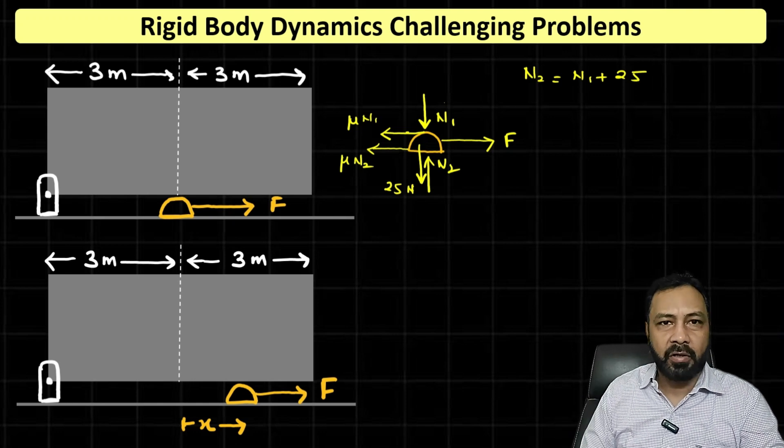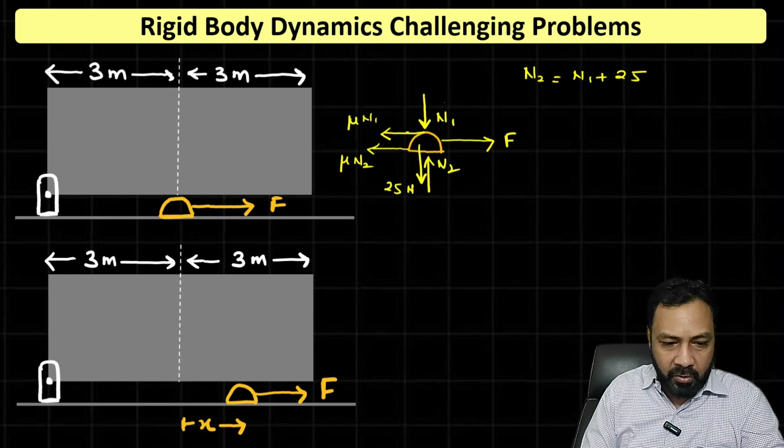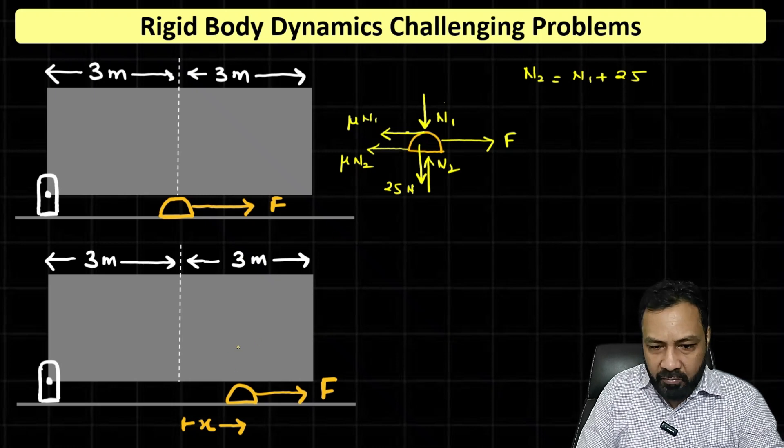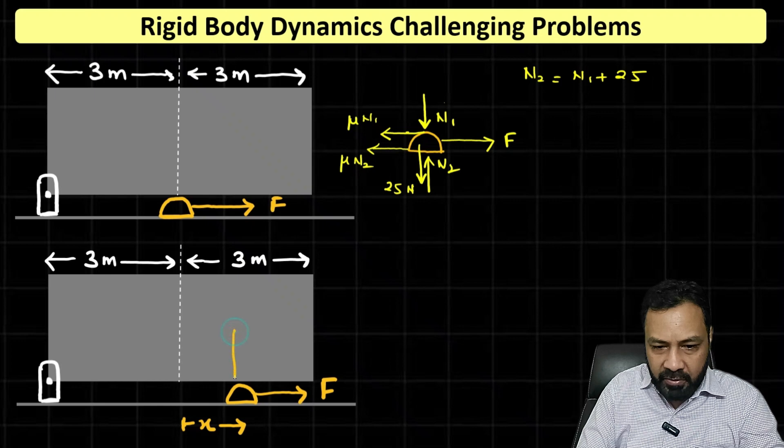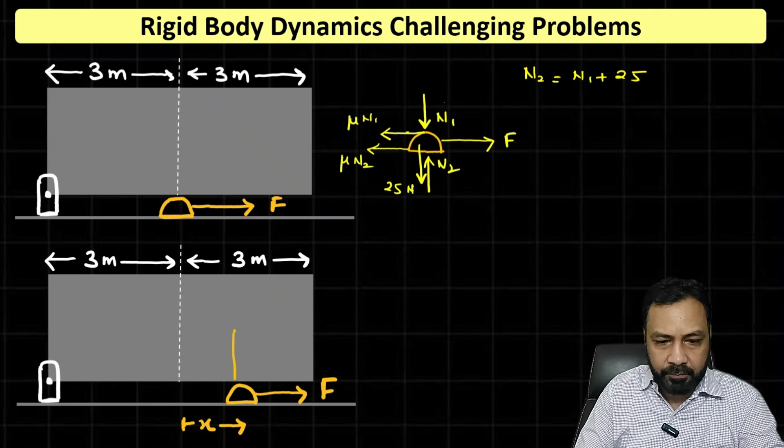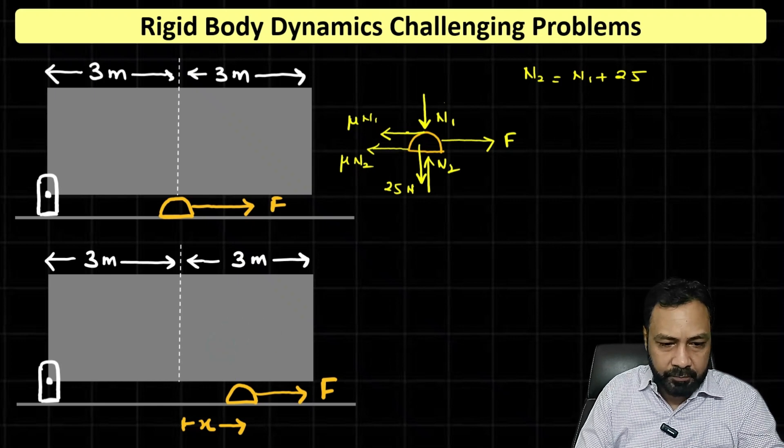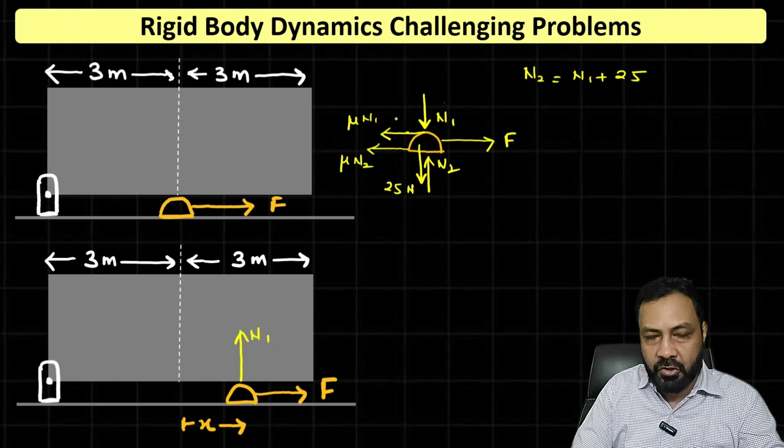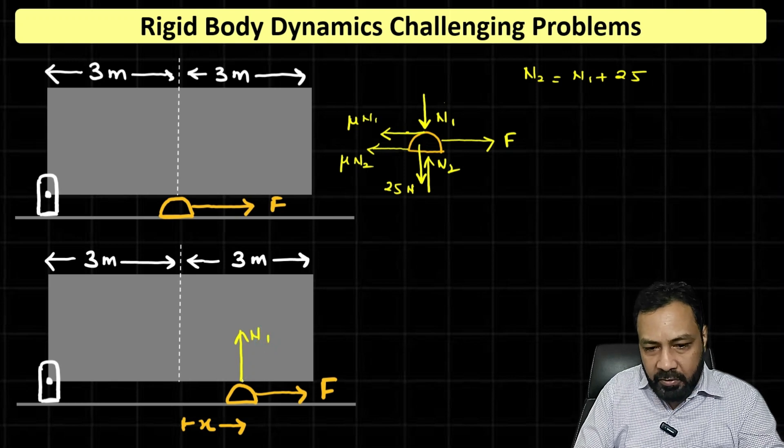Now let me draw the FBD of the main block, that is block A. So what will be there? The reaction of this N1 will be here. This reaction will be here, N1. The reaction of this friction μN1 will be here.